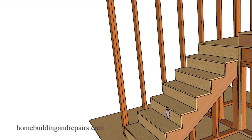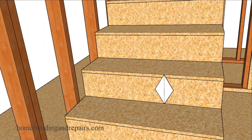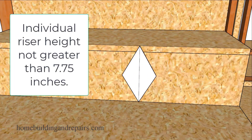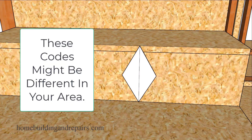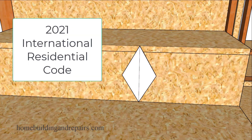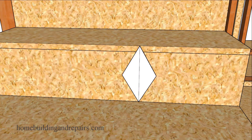Next up will be the individual vertical rise. That will be a maximum — it cannot be larger than seven and three quarters of an inch. I would strongly suggest that you check with your local building authorities and building departments, because they might not be using the codes from the 2021 International Building Code book.